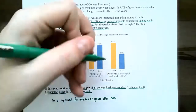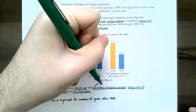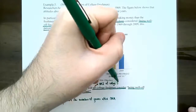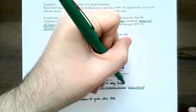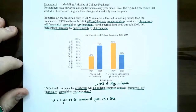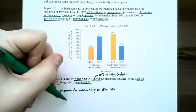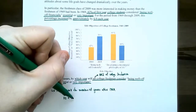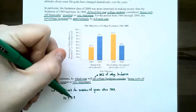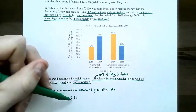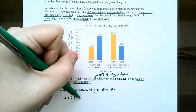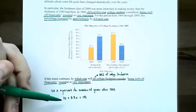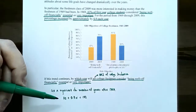Using the five-step strategy, let X represent the number of years after 1969. We're trying to find how many years after 1969 — or what year — all college freshmen will consider being well-off financially very important or essential. The key word is 'all,' which means 100% of college freshmen. So we set up the equation: start at 42%, add 0.9 times X (the yearly increase), and set it equal to 100.